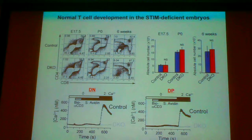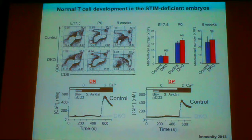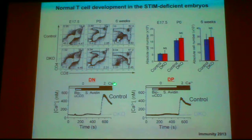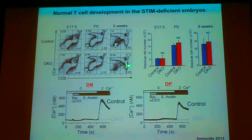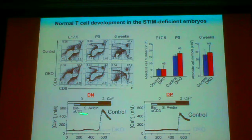We obtained the same results from Vav-Cre-mediated STIM1/STIM2 double-deficient mice. Using Vav-Cre mice allows deletion of genes at the hematopoietic stem cell stage. We could not see any delay or defect of T cell development at embryonic or adult stages, and we observed the same cell numbers, despite the complete defect of store-operated calcium entry in double-negative or double-positive stages.